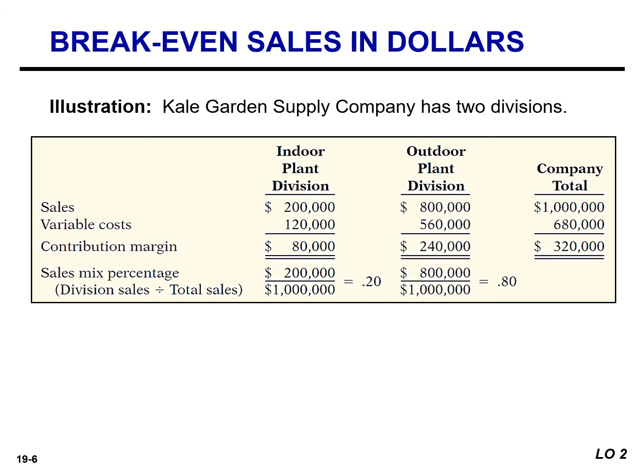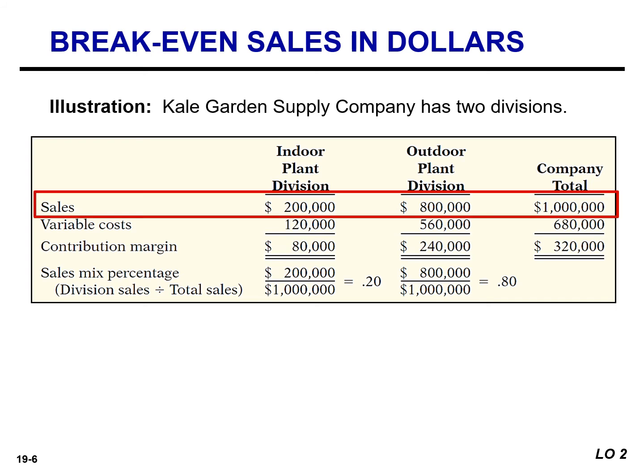To illustrate, suppose Kale Garden Supply Company has two divisions: indoor plants and outdoor plants. Each division has hundreds of different types of plants and plant care products. When we calculate the sales mix percentage, we focus on the sales for each division and divide by total sales of $1 million. The sales mix percentage for indoor plants is 20% ($200,000 ÷ $1,000,000), and for the outdoor plant division it's 80% ($800,000 ÷ $1,000,000).